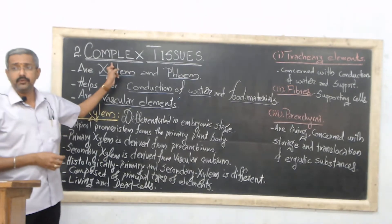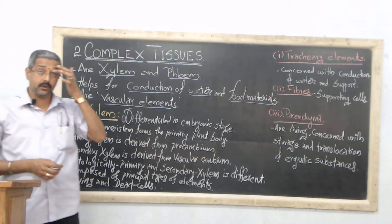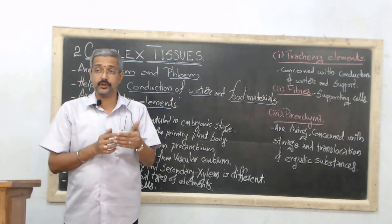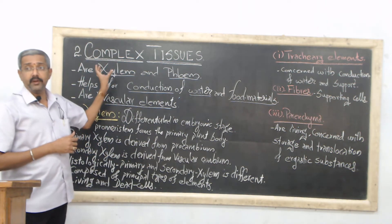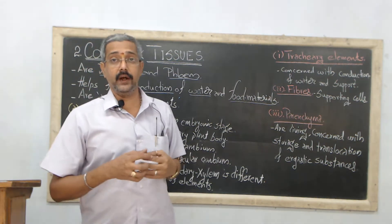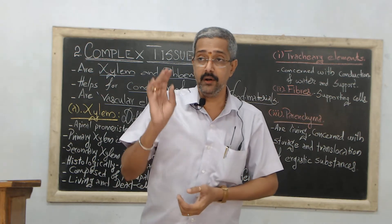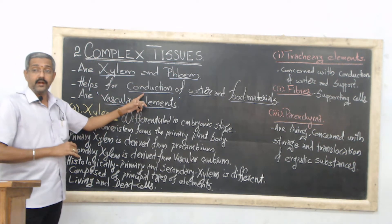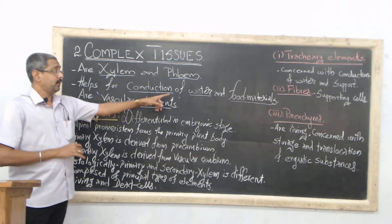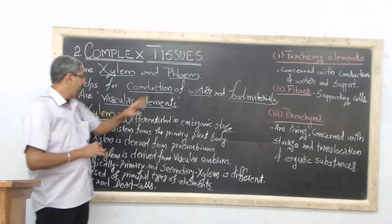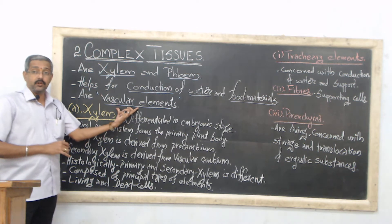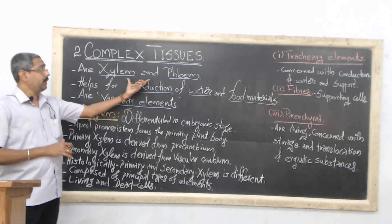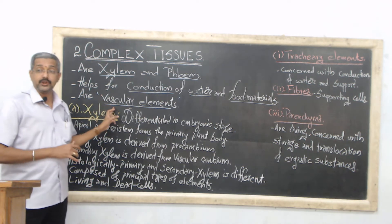The first kind of tissue, named simple tissue, indicates by its terminology that it is simple in structure and also in function. Coming to the second one, complex tissue, 'complex' means it performs numerous functions carried out by both tissues — xylem and phloem. This complexity includes upward conduction by xylem and downward conduction by phloem. Both complex tissues are generally called vascular elements, because xylem and phloem together form the vascular tissue inside the plant body.